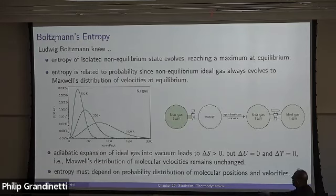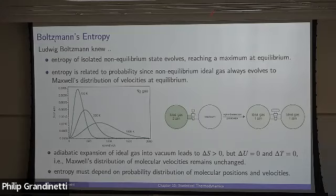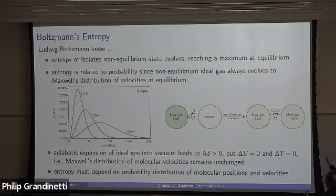An isolated system will evolve over time to a state of equilibrium. In that state, the entropy will always be increasing until it reaches equilibrium, and then the entropy will be at a maximum. At that point, the change in entropy will be zero. So we know that the entropy evolves, increasing until you reach a maximum at equilibrium. He knew that.